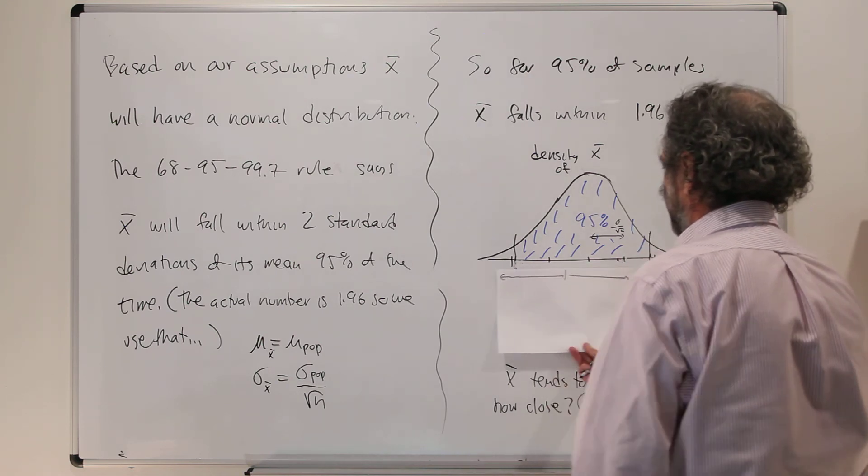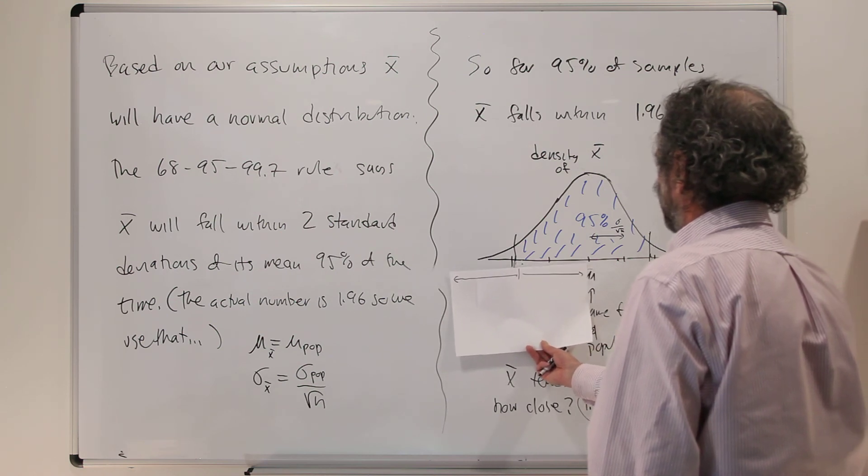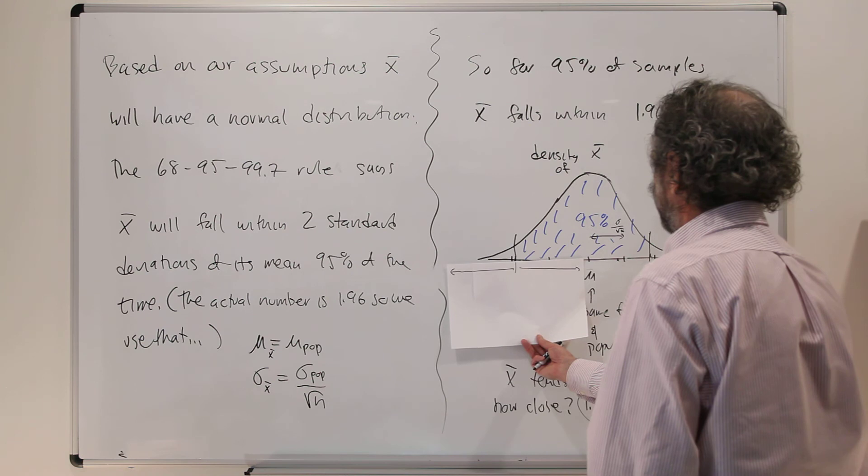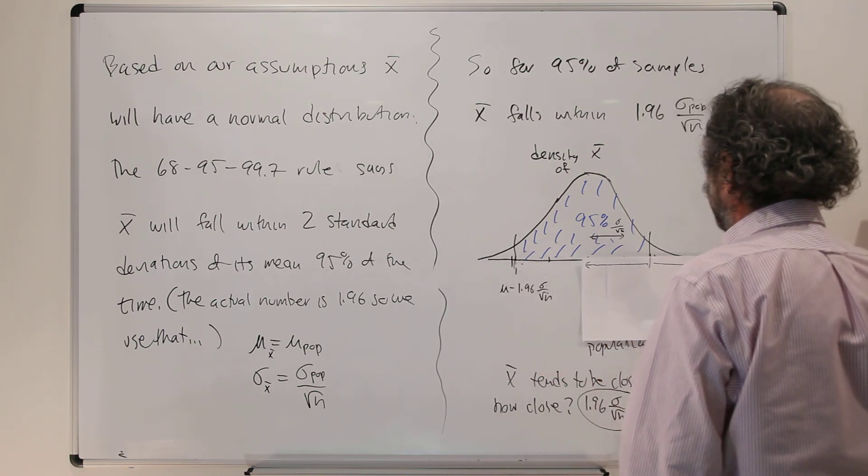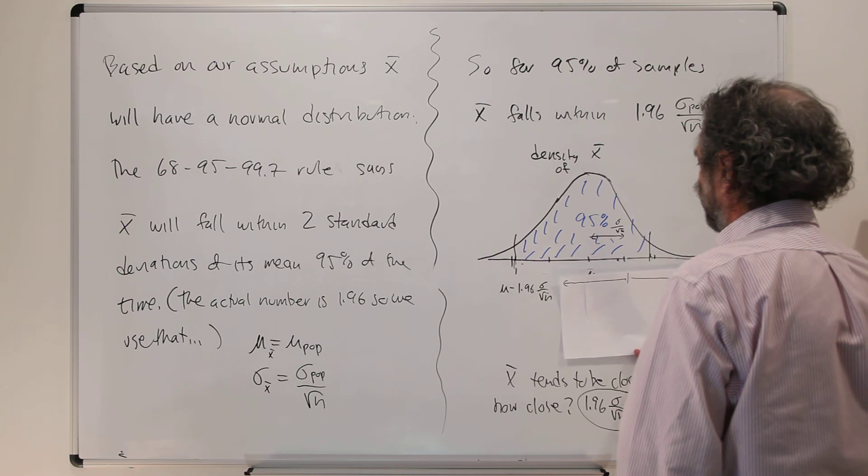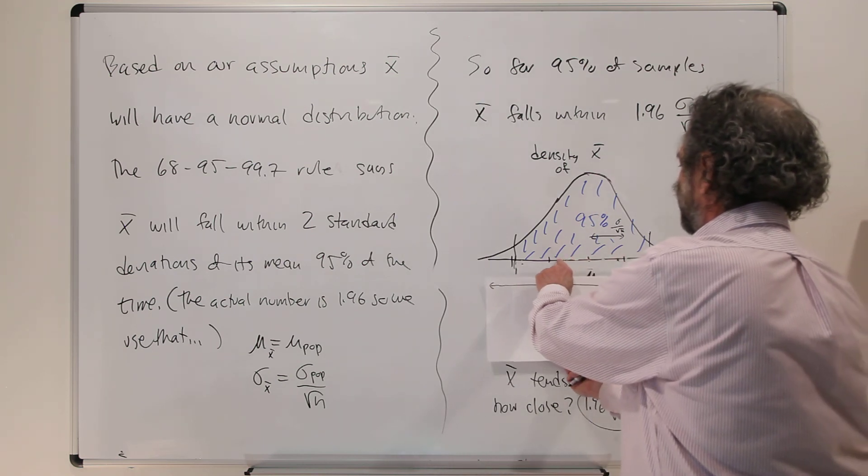And we think about the kinds of x-bars where it would go far enough so that interval captures mu. If the x-bars are within that distance, plus or minus 1.96 sigma root n, then the intervals I create using those, here's the x-bars that could happen down here, right?